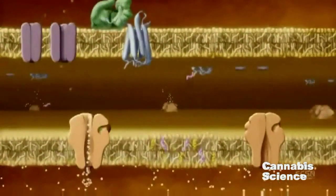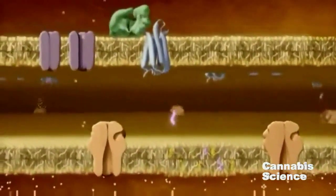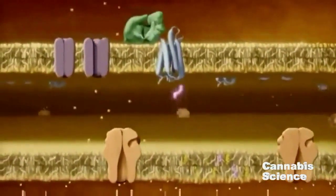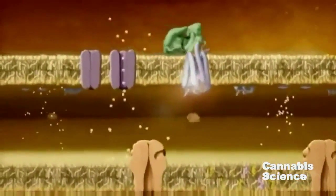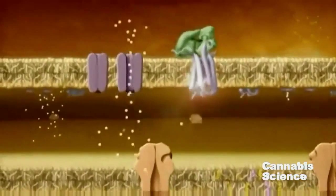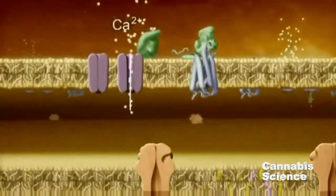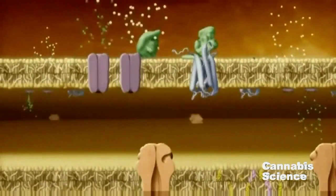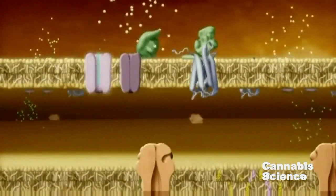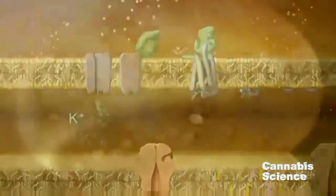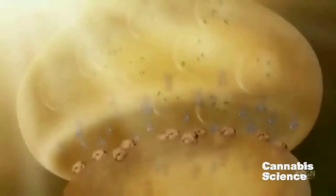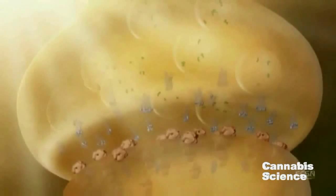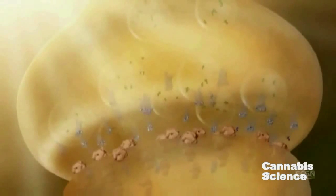This calcium buildup causes the synthesis and release of endocannabinoids from membrane lipids. Diffusing across the synaptic cleft, the endocannabinoids bind to the CB1 receptor, activating the G-protein. Activation influences ion flow. The result is suppression of pre-synaptic neurotransmitter release. Endocannabinoids are subsequently taken back into the cell and enzymatically degraded.